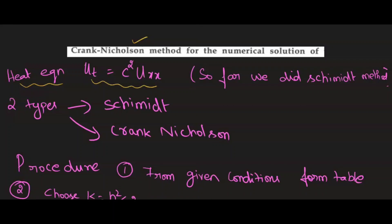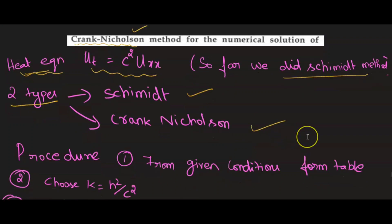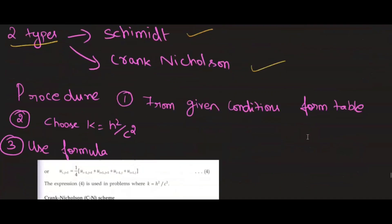In this video, let's solve the heat equation ut = c² uxx by using the Crank-Nicholson method. We have already used the explicit method in the previous video. There are two types in your syllabus: one is the explicit method and the other one is the Crank-Nicholson method. In this video, we are going to solve by using the Crank-Nicholson method.